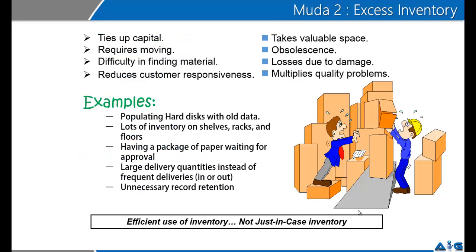Waste number two is excess inventory. When you produce more than necessary or you procure more inputs than necessary, you are creating another waste referred to as excess inventory. Excess inventory can be very dangerous for business as it ties up capital, requires moving, and takes up valuable space. In fast-moving commodities, you are often challenged with obsolescence of inventory. Excess inventory can lead to losses due to damage and multiple quality problems. It reduces your customer responsiveness. I would also add that excess inventory is often innovation preventive.